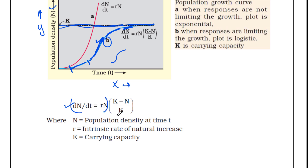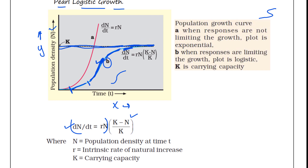But in the case of logistic growth, we have to include the carrying capacity part. We add the term (K minus N) divided by K to the equation. Since we have to consider carrying capacity, we cannot ignore that part. You can see that the exponential growth red curve exceeds the carrying capacity line, which is practically not possible.